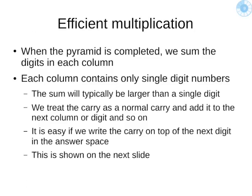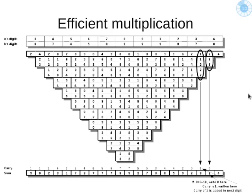Now, all I have to do is add up, or sum, all the digits in each column. That will create carry, and I'll show you how to deal with the carry just like normally — like a normal carry. Start with a four there: it just becomes a four in the answer space. No carry, carry of zero.